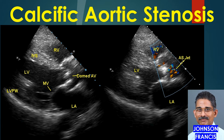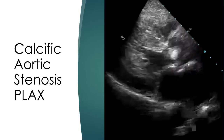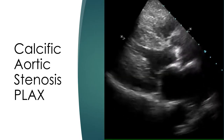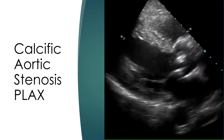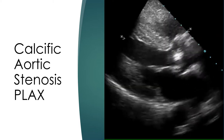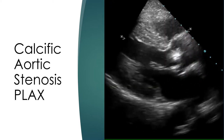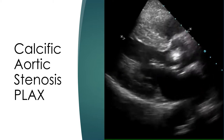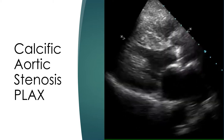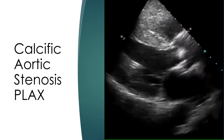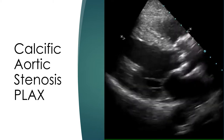Colored Doppler echocardiogram in calcific aortic stenosis. Echocardiogram in parasternal long axis view showing calcific aortic wall which domes in systole with restricted opening. The aortic orifice is quite narrow.